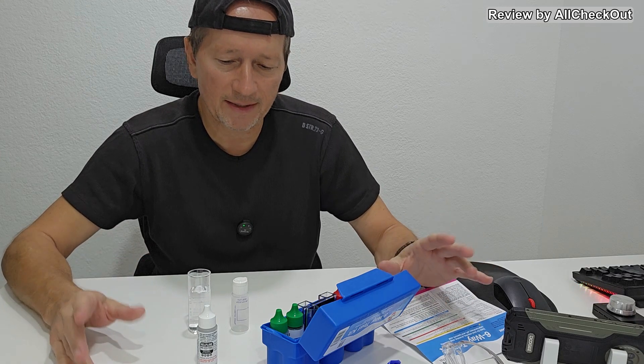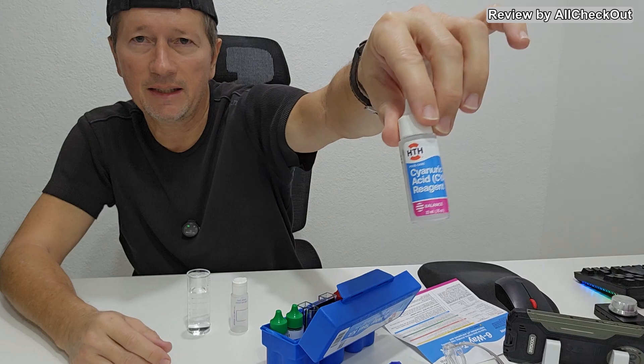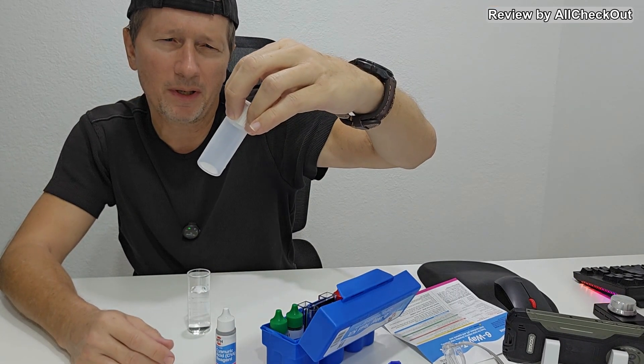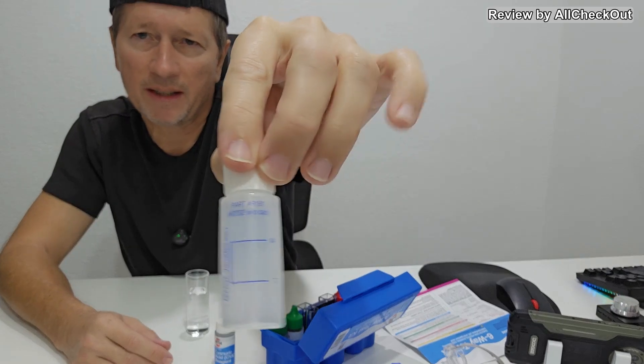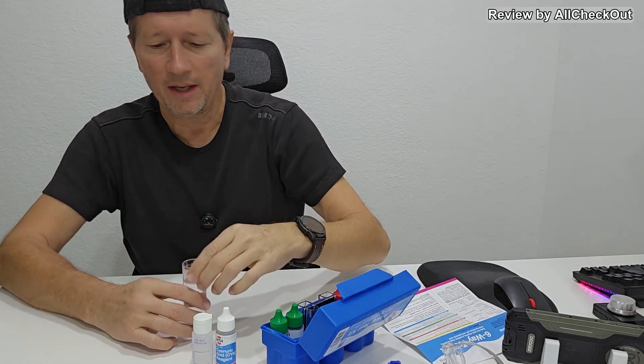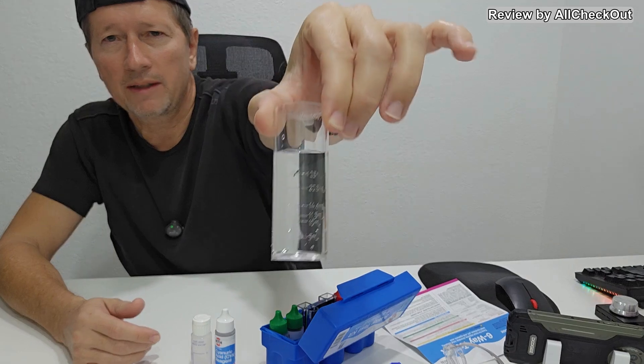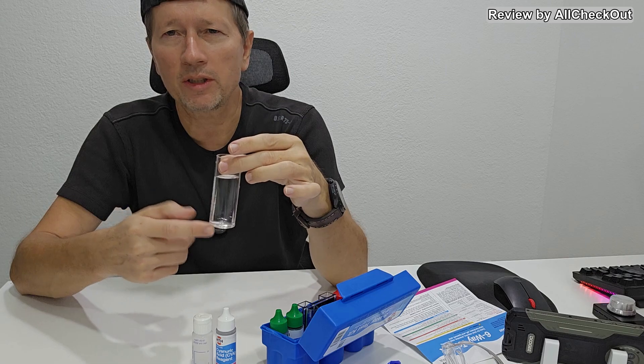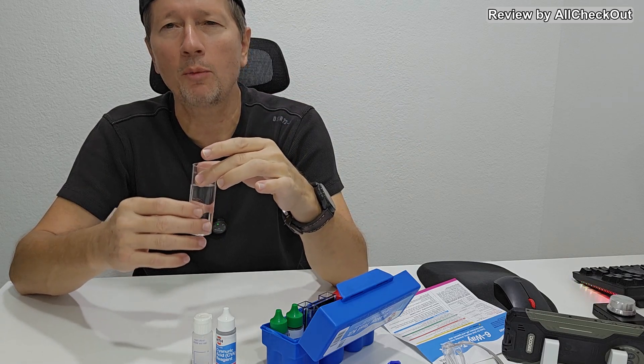So what we really need for the cyanuric acid test is this chemical here. We need this bottle, number 9191 described here on top, and I took also this cup here which is inside.